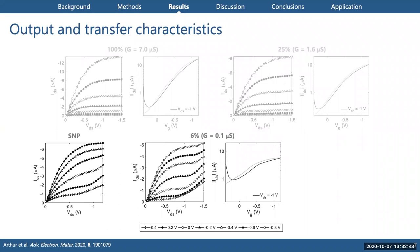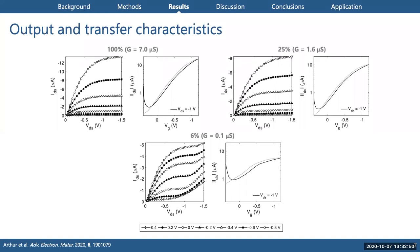Let's begin the analysis by looking at the output and transfer characteristics. On this slide we have representative curves for HIFETs with 100%, 25%, and 6% PEDOT:PSS gate electrodes. This is a percent of the original solution as purchased, and we've diluted it with deionized water. The effect of the very thin 6% gate resembles the effect of the silicon nanoparticle gate.